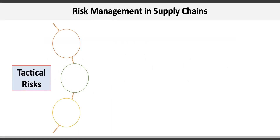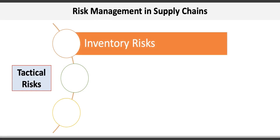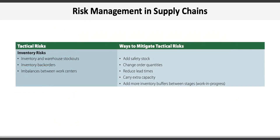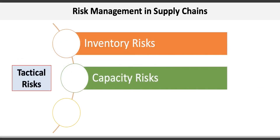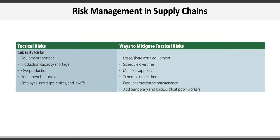The first general category is tactical risk, which consists of three types. The first is inventory risk — examples include warehouse and inventory stockouts, back orders, and imbalances between work centers. Ways to mitigate inventory risk include adding safety stock, reducing lead times, and adding inventory buffers to work in progress. The second tactical risk is capacity risk — examples include equipment shortages, overproduction, and employee strikes or layoffs. Mitigation strategies include scheduling overtime, using multiple suppliers, and adding a backup pool of workers.